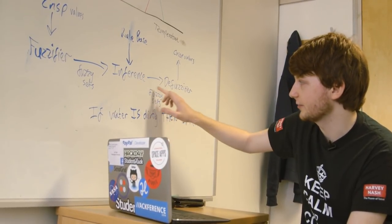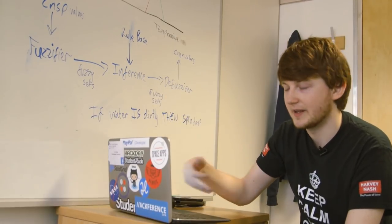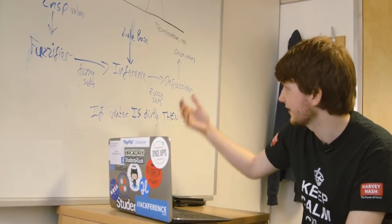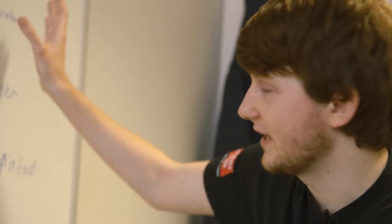We decide how fast it should spin, how much water should be in the next rinse cycle, how much detergent we should mix in. We remove the fuzziness from that, and we give a crisp value as output, and then that action is undertaken by the system.